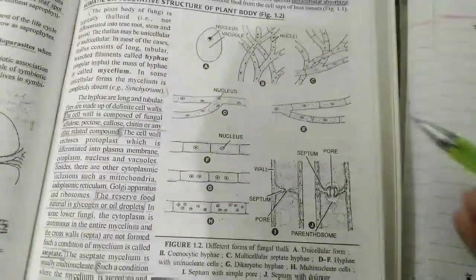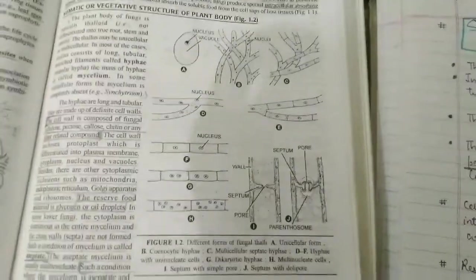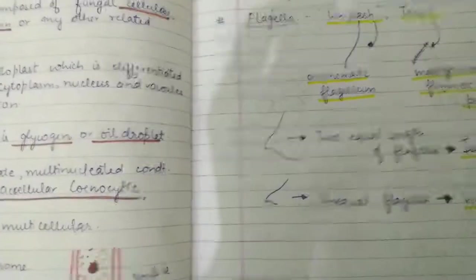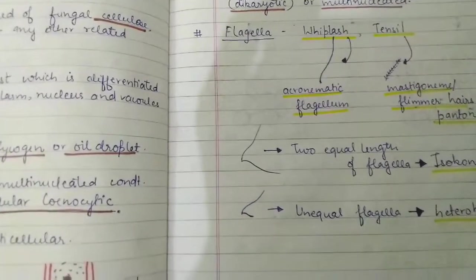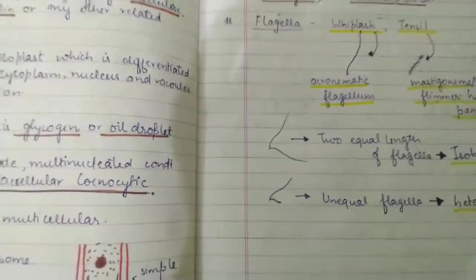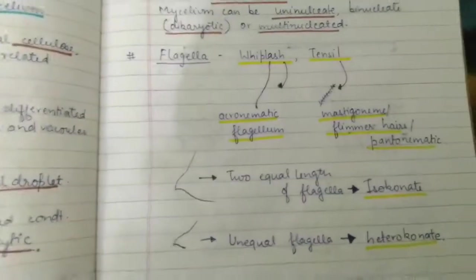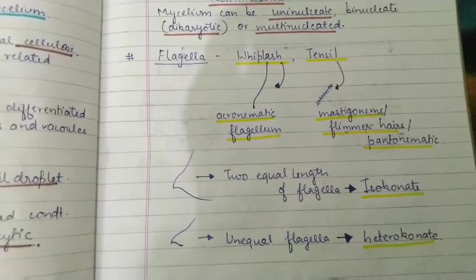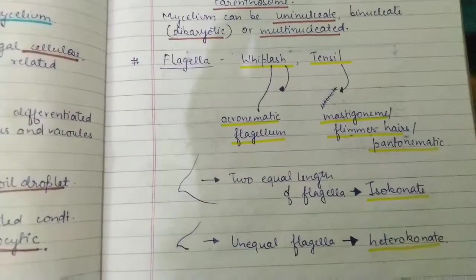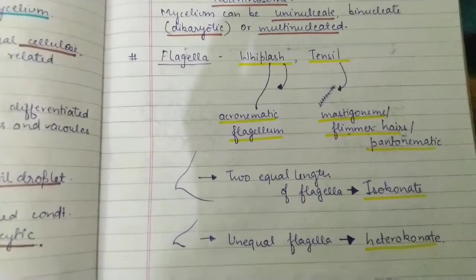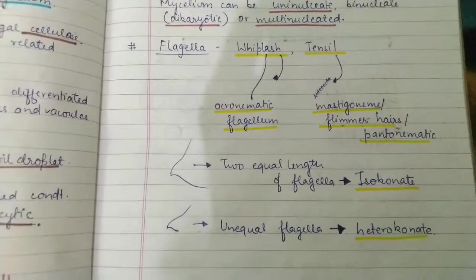Like algae, fungi also possess flagella. The whiplash is a smooth, long flagella — also called acronematic flagella. The tinsel flagella is short and hairy — also called pantonematic or mastigoneme flagella. These are the two main types.